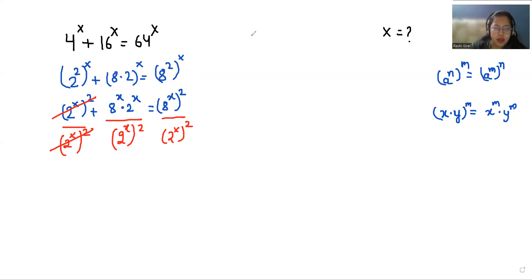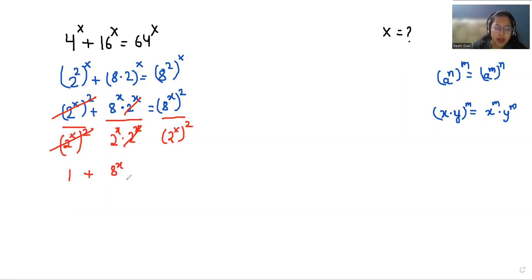Now I am going to divide by (2^x)² throughout the equation. We can write 1 in the form of (2^x)² as 2^x times 2^x, so those cancel out. What is left is: 1 plus 8^x / 2^x equals (8^x)² / (2^x)².